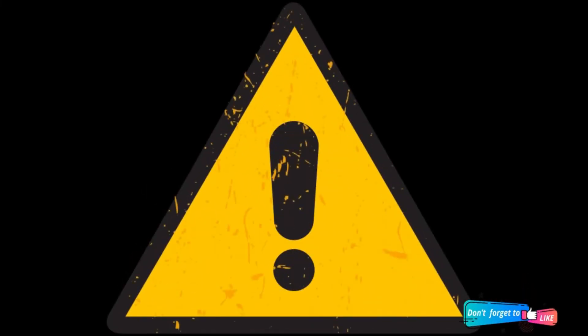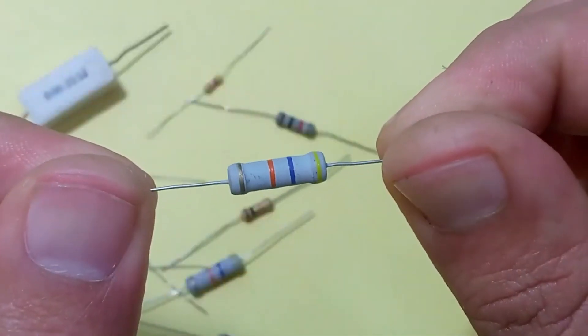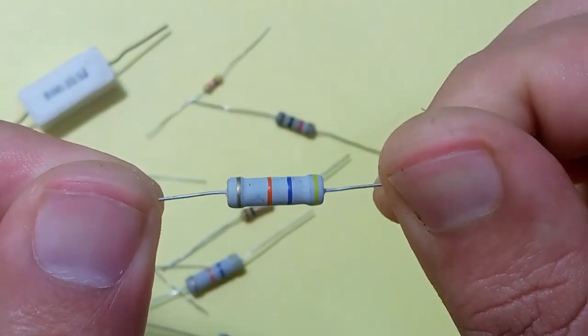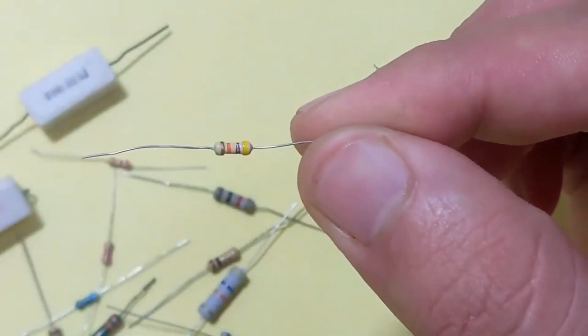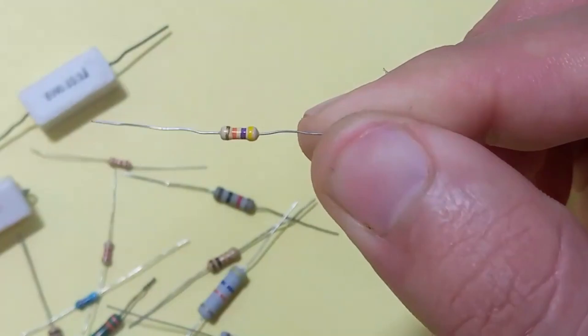Now to find the resistance of different resistors. Look at this one, this 46k ohms resistor of 1 watt. Look at this one, this also 46k ohms resistor but of quarter watt.